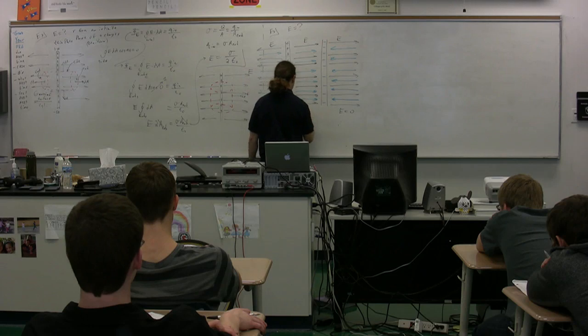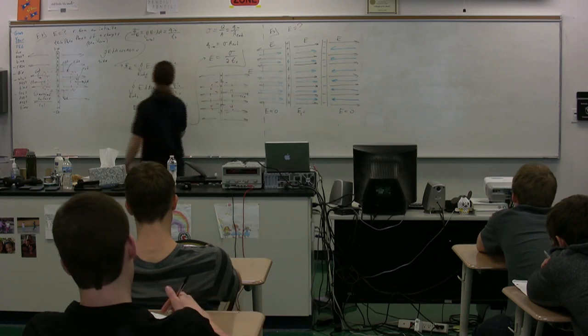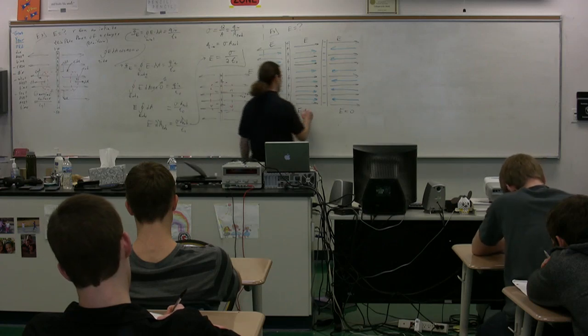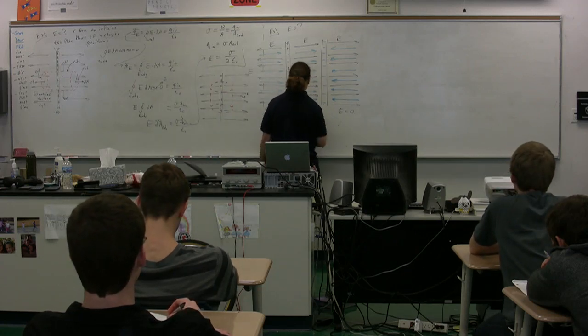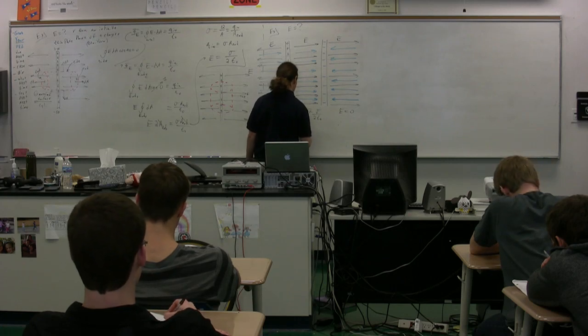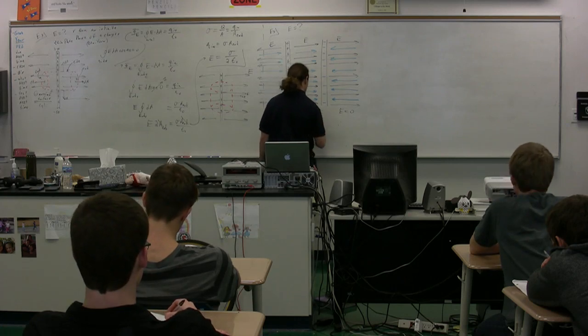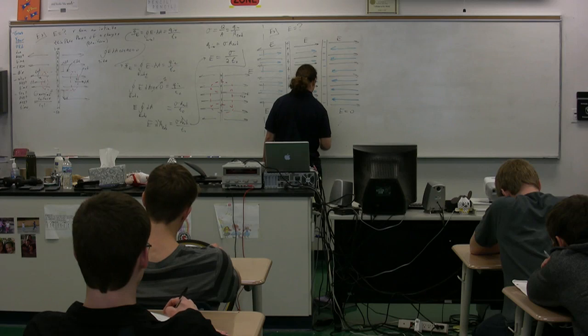So now we know that the electric field between the two is going to be just the addition of these two, which is going to be two times the surface charge density divided by two E naught. In other words, the electric field between the two plates is equal to the surface charge density divided by E naught.